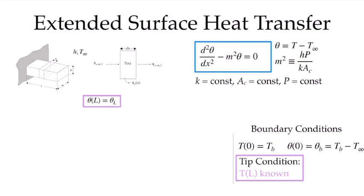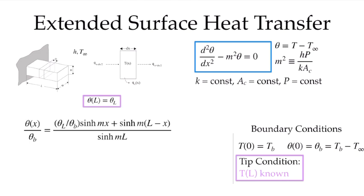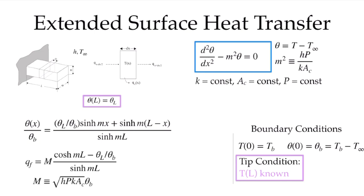For the third condition, if the fin bridges two materials of known temperature, we know the temperature at the tip. In terms of the reduced variable, we know theta at L. Looking up solutions to the ODE for that case, we get another expression for the non-dimensional reduced temperature involving hyperbolic trigonometry functions. The same process — taking the derivative of the temperature distribution and applying Fourier's law — gives Q_f using the same capital M defined in the previous cases.